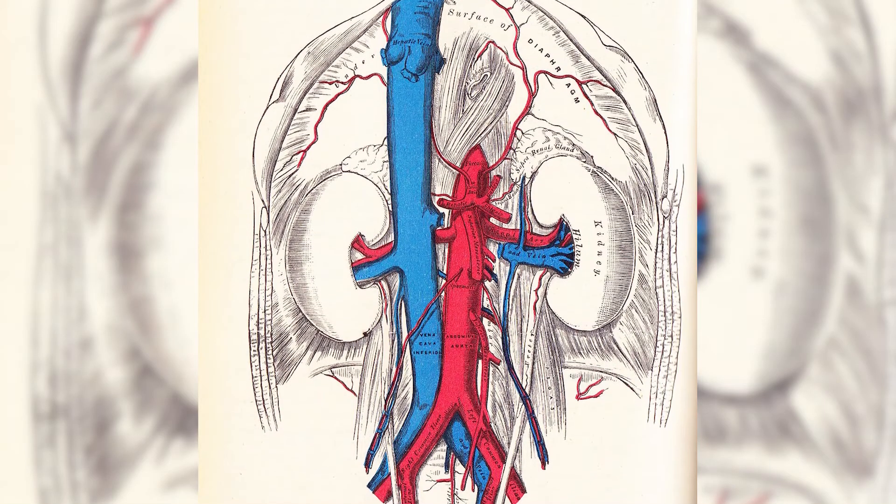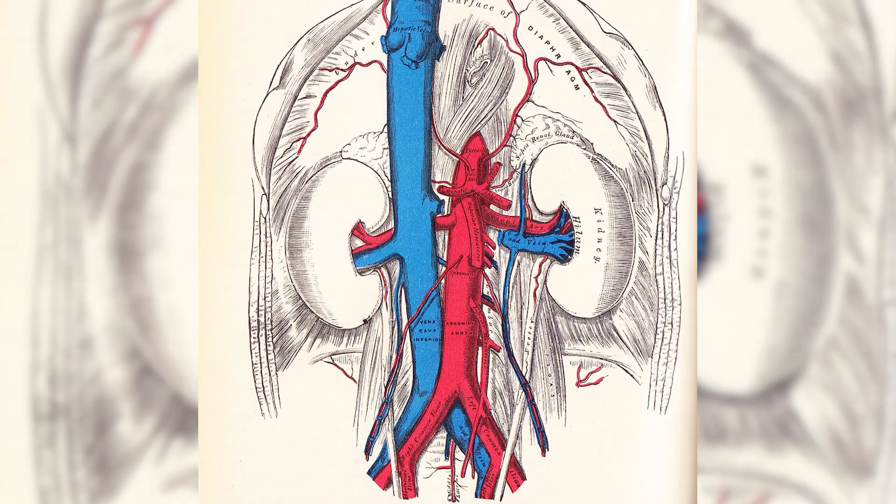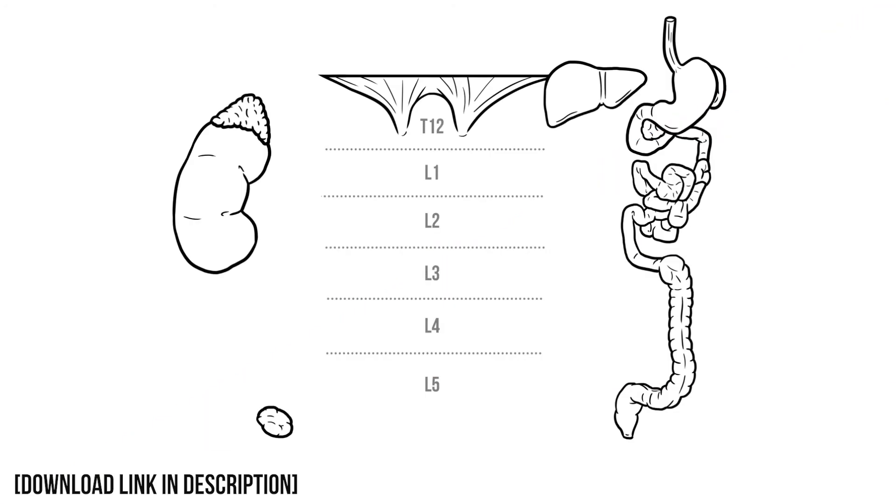In particular I want to look at the branches that leave the aorta, focusing on where they come from and where they go. I'll be drawing them out on this illustration here.